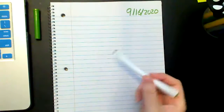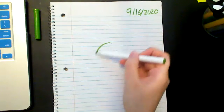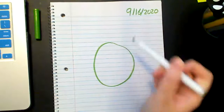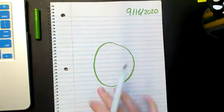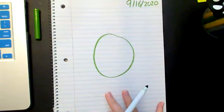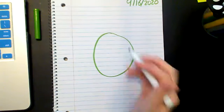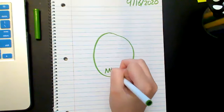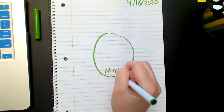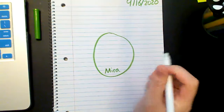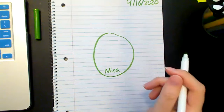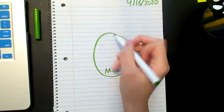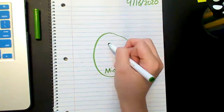After you write the date, go ahead and make a circle in the center of your page, and you're going to write our main character's name which is Mira, and then draw a picture of Mira inside.